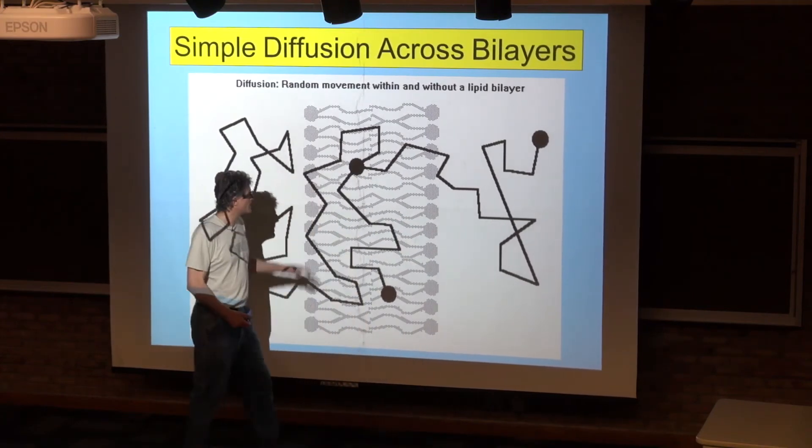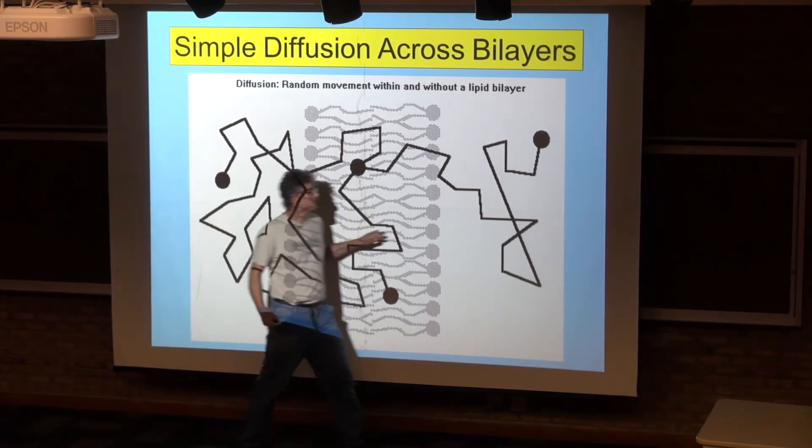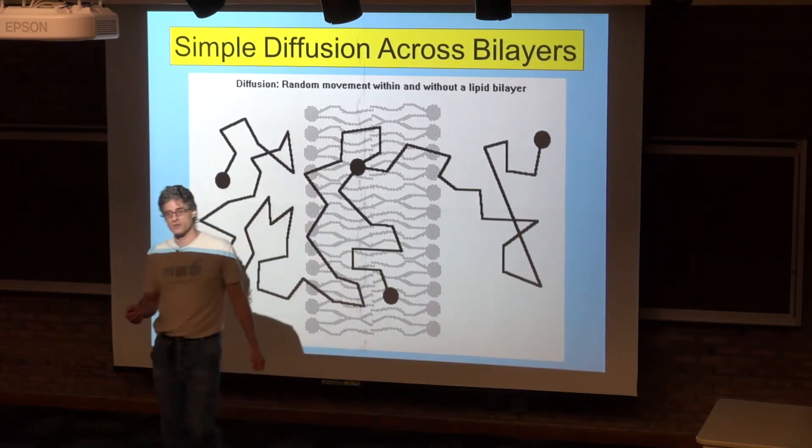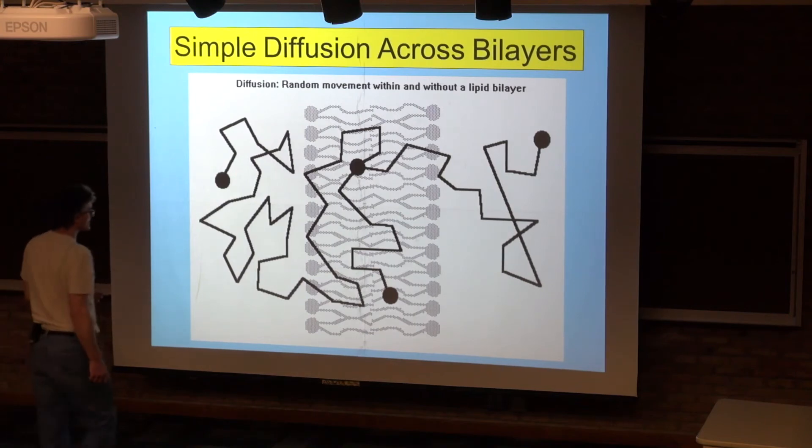Which means that what you're going to get is a concentration of the substance in the lipid bilayer and then effectively a slow leak of that substance out of the lipid bilayer on both sides. But this is the way that we have movement across the lipid bilayer.